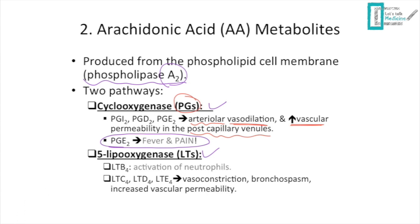The lipoxygenase pathway produces leukotrienes. Leukotriene B4 activates and attracts neutrophils to the site of inflammation. Leukotrienes C4, D4, and E4 cause vasoconstriction, bronchospasm, and increased vascular permeability through smooth muscle contractility. The smooth muscle cells in blood vessels are called pericytes — pericytes will contract.